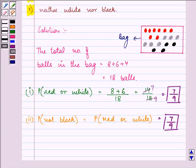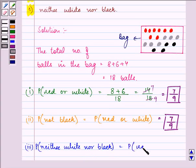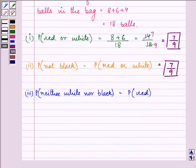And finally, for the third part, we need to find out the probability that it is neither white nor black. So if it is neither white nor black, then that means the probability of finding out a red ball will be the required answer.